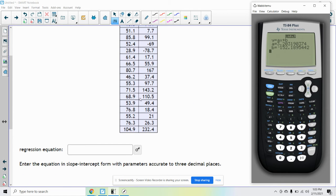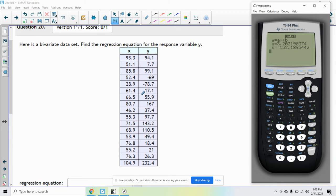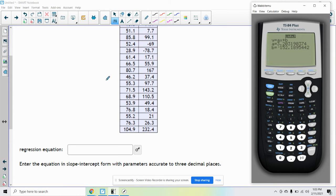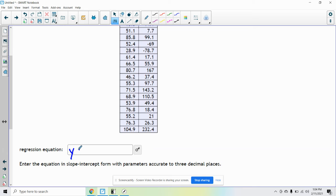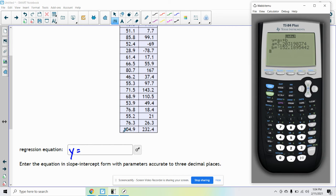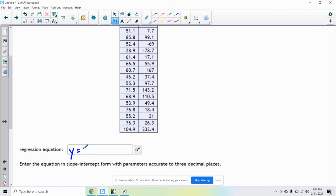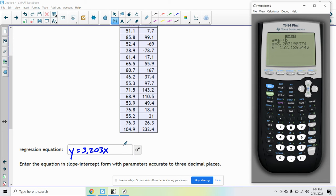And I get my printout, so you just make sure you want to write it in terms of y and x. So we have y equals 3.203, this is three decimal places, so yeah 3.203x minus 152.190.